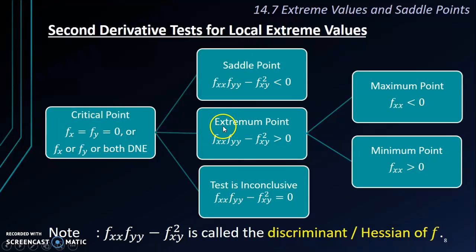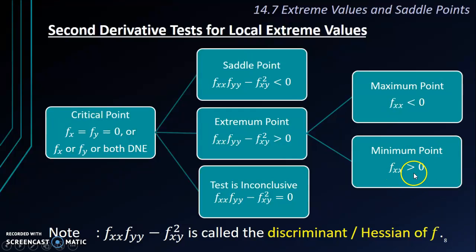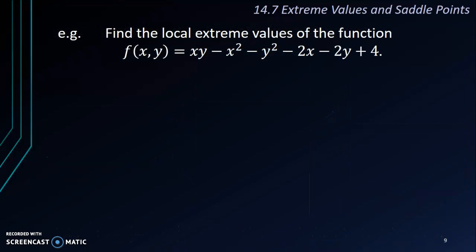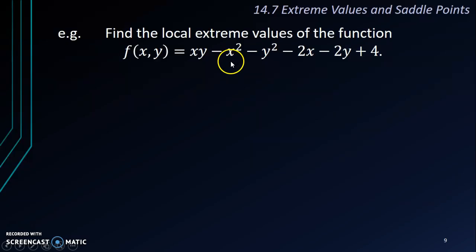If the discriminant is positive and the point is an extremum, we look at fxx: if fxx is negative, the point is a local maximum; if fxx is positive, it is a local minimum. Let's take a look at this example: find the local extreme values of f(x,y) = xy minus x squared minus y squared minus 2x minus 2y plus 4.